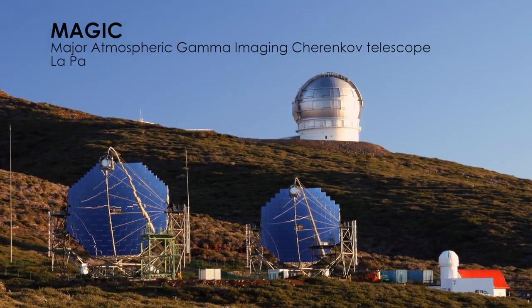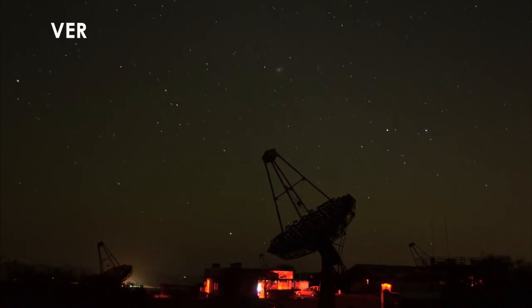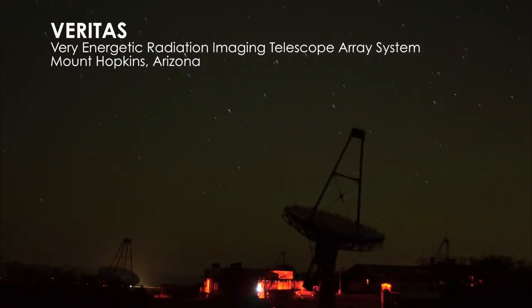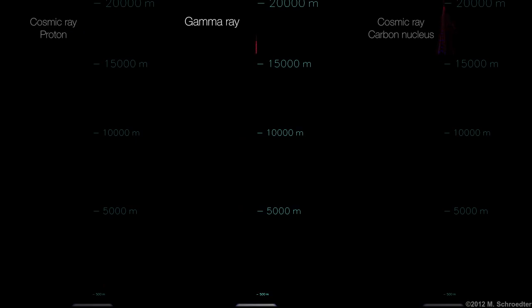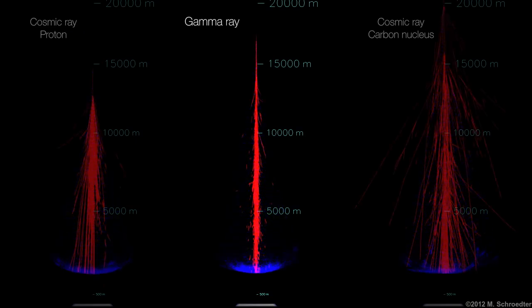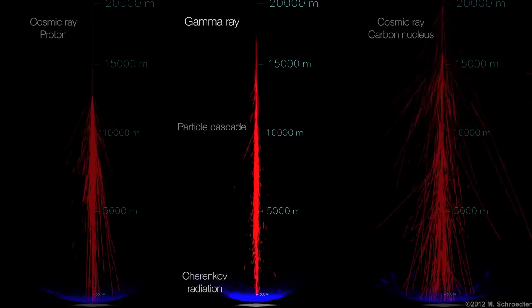Ground-based gamma-ray observatories sport much larger light collectors than Fermi. But like traditional telescopes, they only work at night. Both MAGIC and VERITAS work by catching faint flashes of visible light produced when a high-energy gamma ray strikes the upper atmosphere. This creates a shower of fast-moving charged particles that emit a glow called Cherenkov radiation.